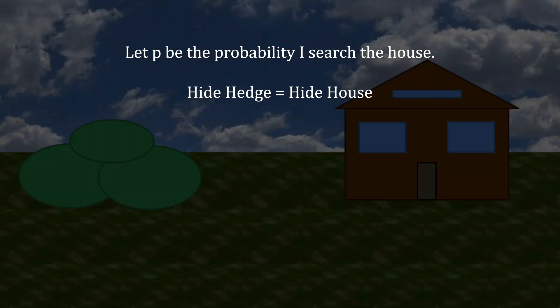Now let's prove everything. Whenever we're in a situation that requires this sort of randomization, the strategy of one player is designed to make both of the alternatives of the other player look equally attractive. So if we want to figure out the probability that I search the house, we need to figure out what mixing percentages are going to make your payoff for hiding behind the hedge equal to your payoff for hiding behind the house.